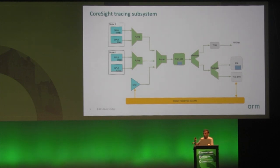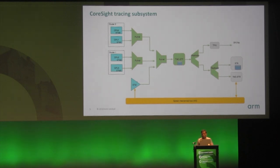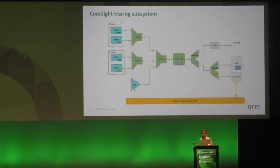The second class of components are the sinks, where trace data that is generated is captured so you can extract it for later analysis — depicted in green. The first sink is the TPIU, the Trace Port Interface Unit, which can carry trace data generated on the system to an external component. You can connect a trace analyzer and take the trace data out of the system.